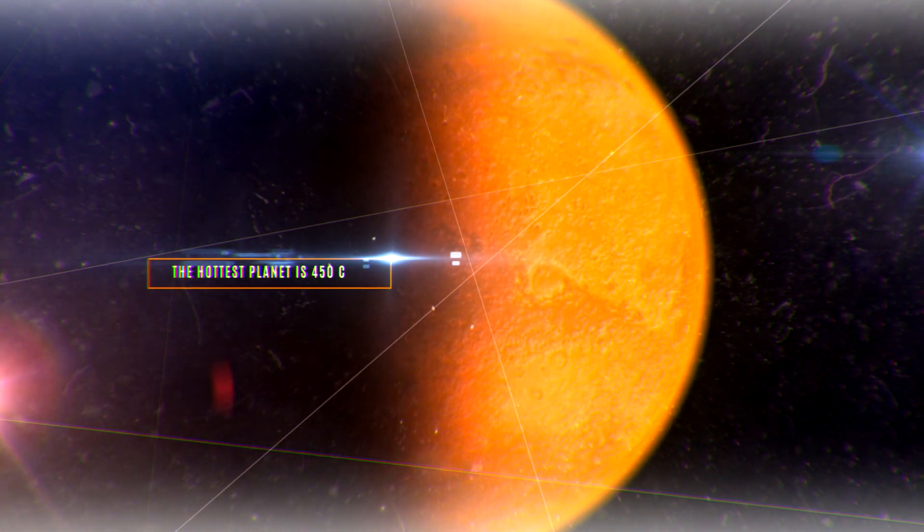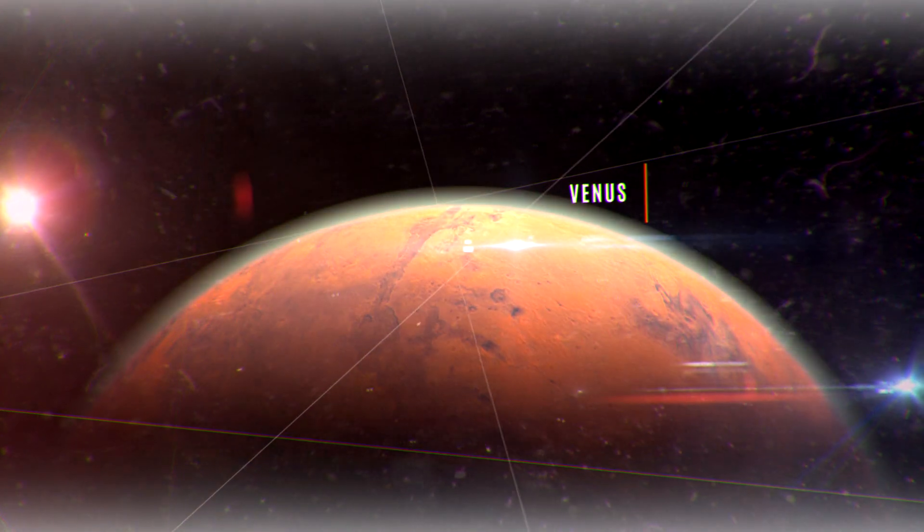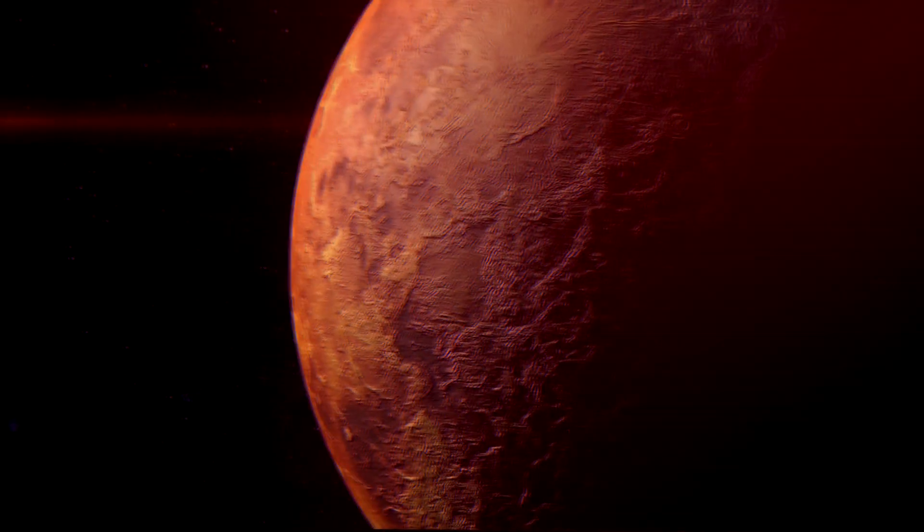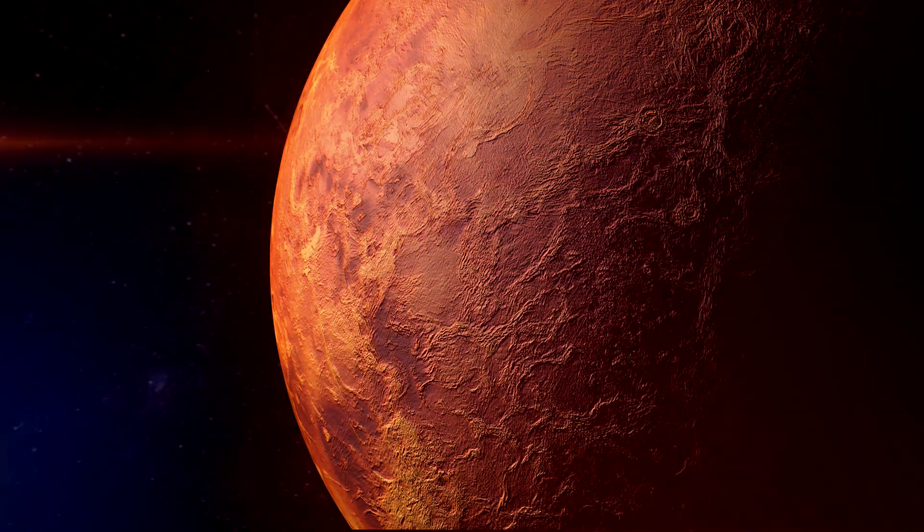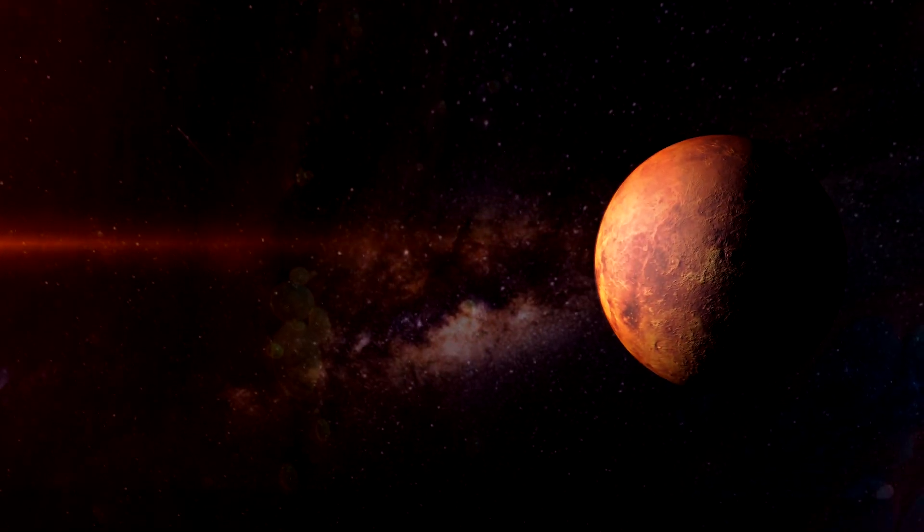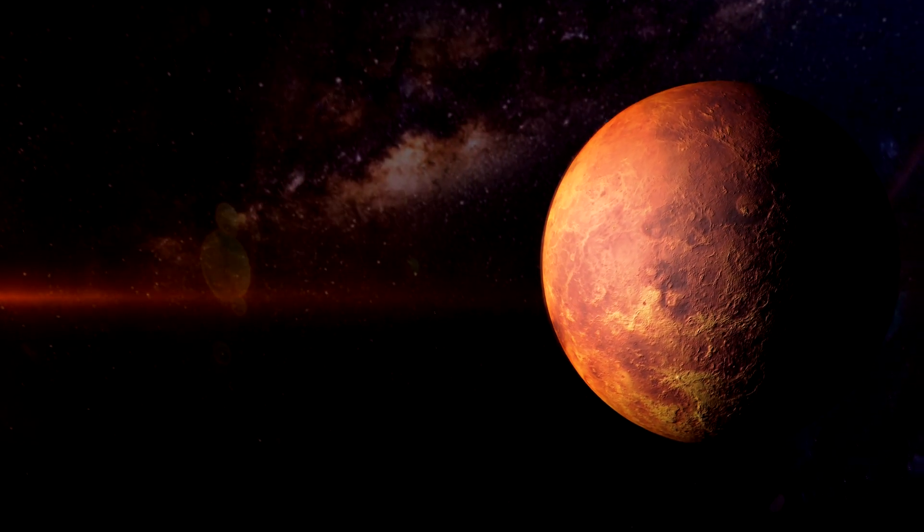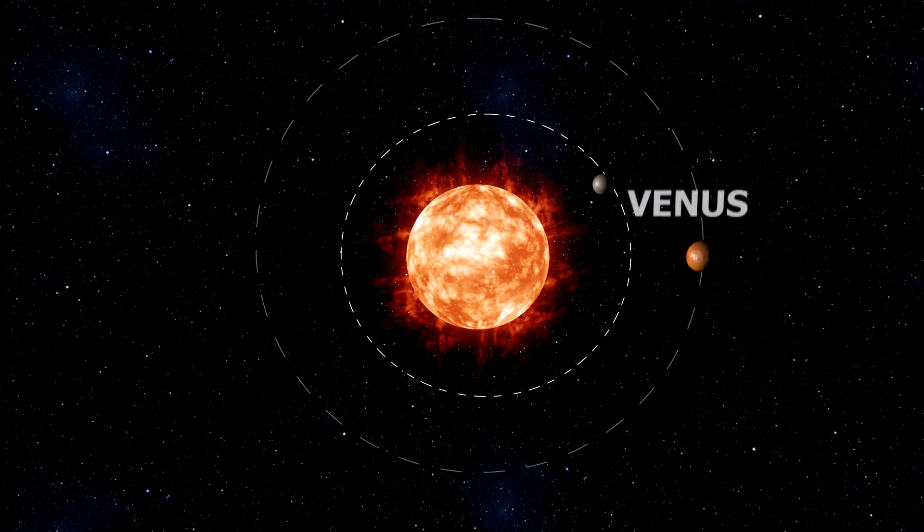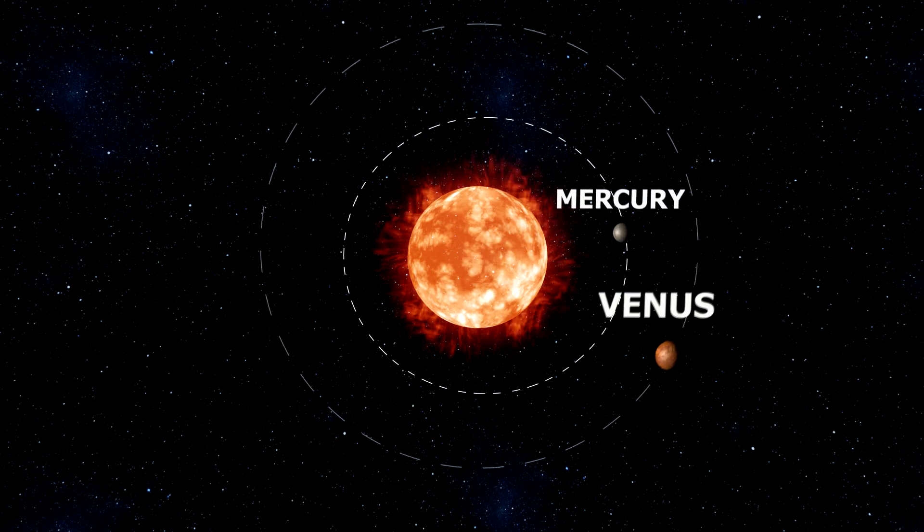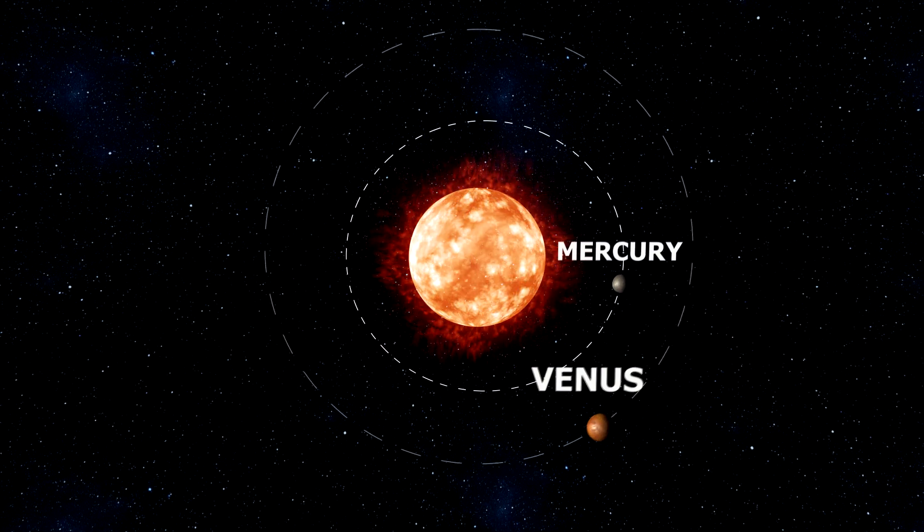The hottest planet in our solar system is 450 degrees Celsius. Venus is the hottest planet in our solar system and has an average surface temperature of around 450 degrees Celsius. Interestingly, Venus is not the closest planet to the sun. Mercury is closer. But because Mercury has no atmosphere to regulate temperature, it has a very large temperature fluctuation.